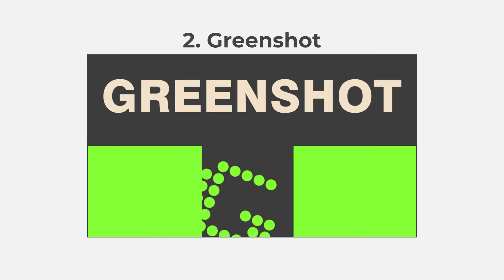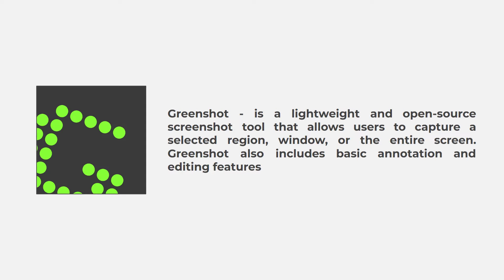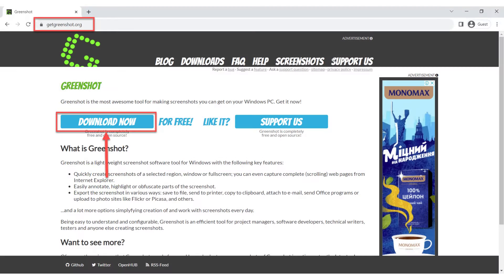GreenShot is a lightweight and open-source screenshot tool that allows users to capture a selected area, window, or the entire screen. GreenShot also includes basic annotation and editing features. To download and install GreenShot on your device, visit GetGreenShot.org. On the website, find the Download Now option, and after downloading, follow the on-screen instructions to install the tool.